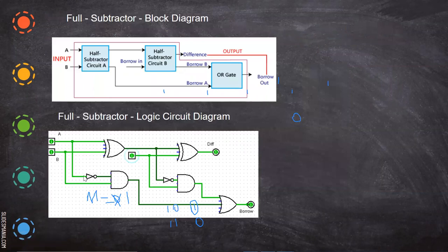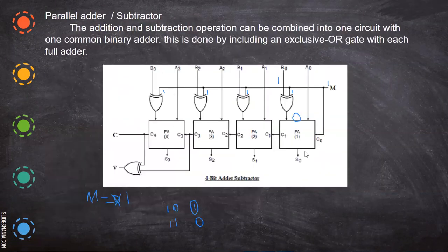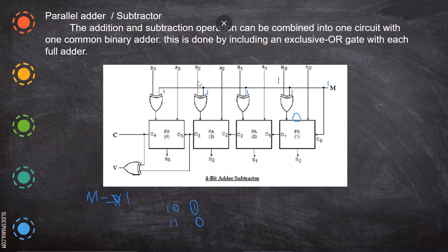Here we reversed the B input. Alternatively, the A input can be reversed — both approaches give the same output. You can put the XOR gate on the A-naught side and reverse A-naught instead; both are equivalent. The next topic we are going to see is decoders, which we will cover in the next video.